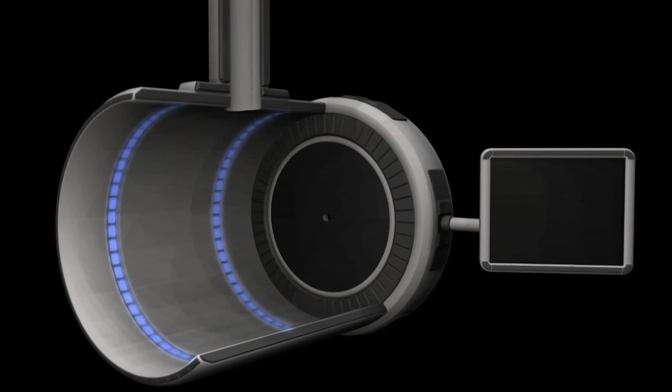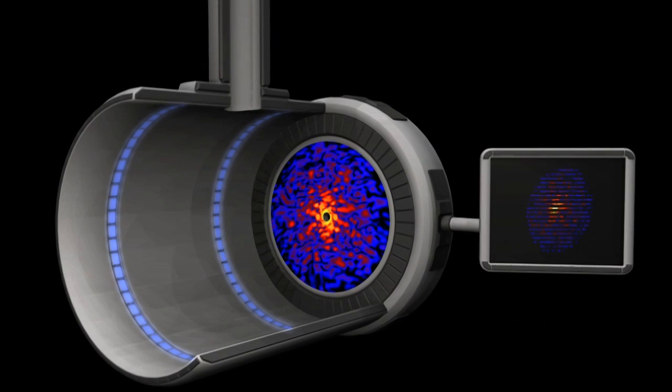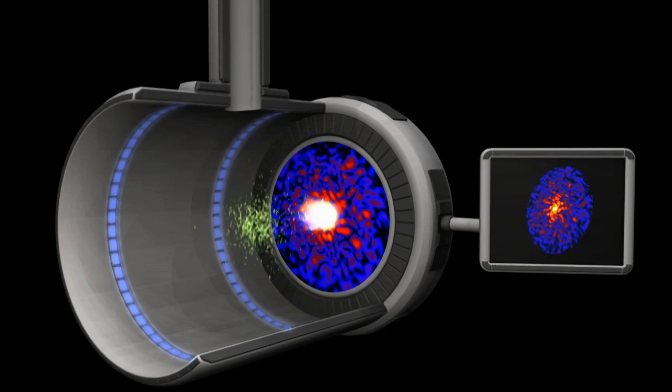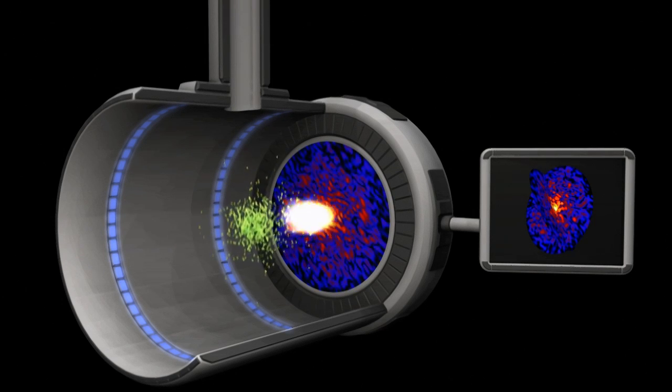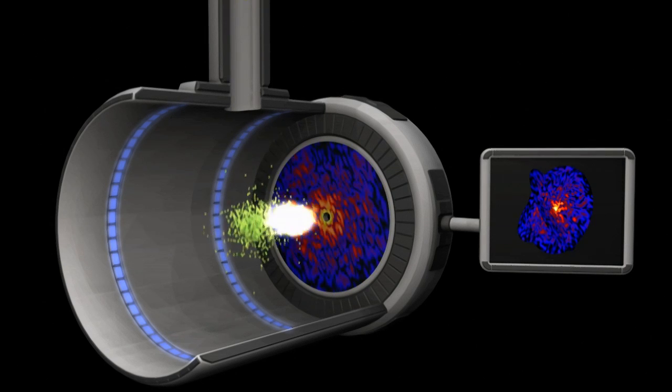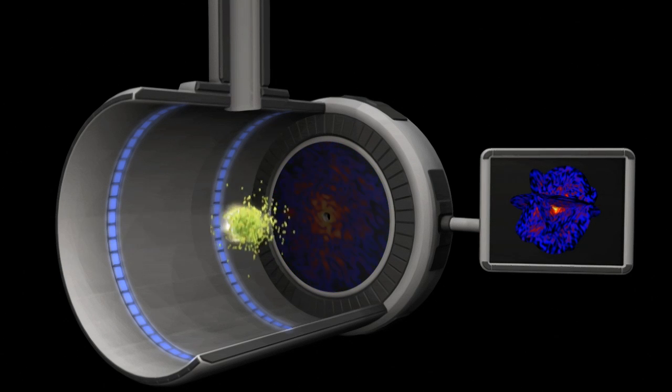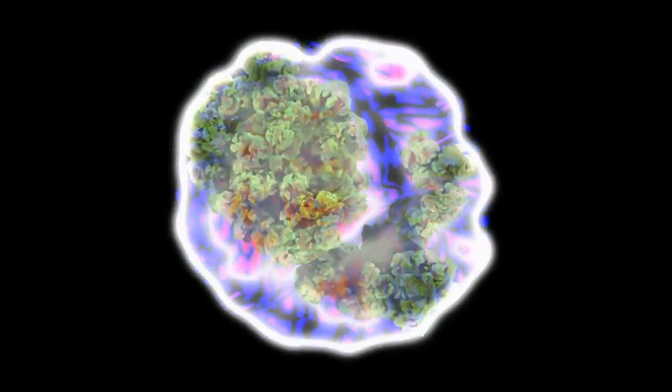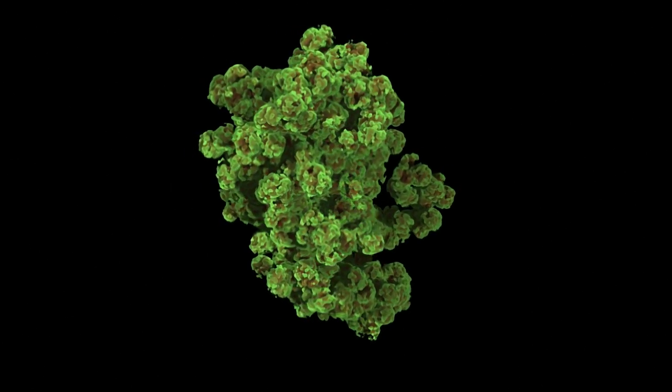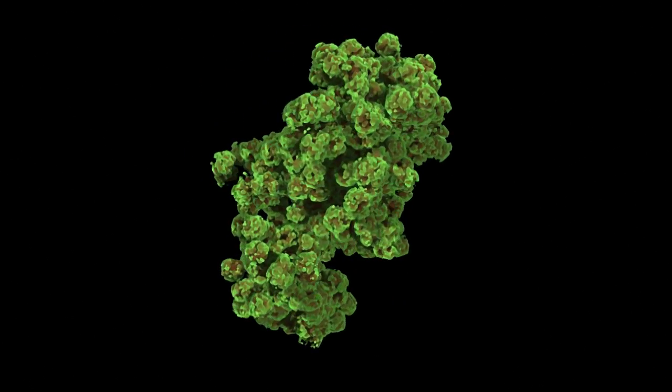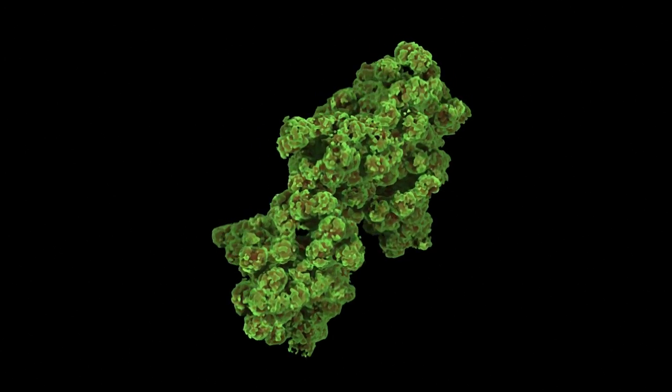For example, the LCLS pulse can be used to make images of single molecules, even though the beam is powerful enough to instantly disintegrate such a tiny sample. Each pulse is so fast that an image is captured in the sliver of time before the molecules can fly apart. Images captured in this way will be strung together frame by frame to create the world's first molecular movies of individual biological molecules in action.